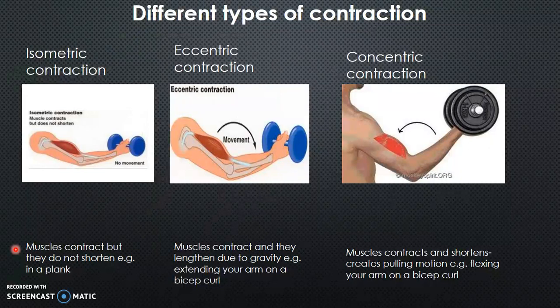Concentric contraction is when muscles contract and shorten, creating a pulling motion — for example, flexing your arm on a bicep curl, or in basketball when you push up and extend your legs when jumping on a jump shot.